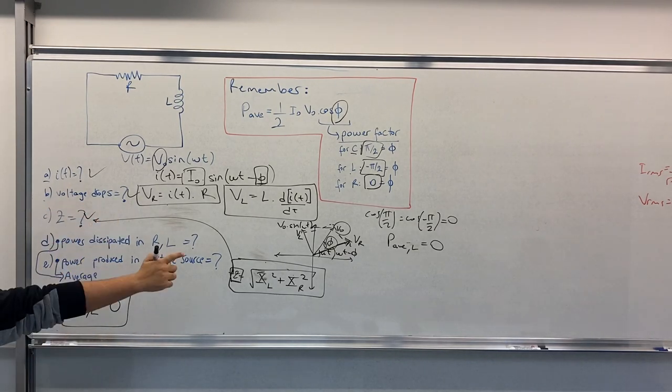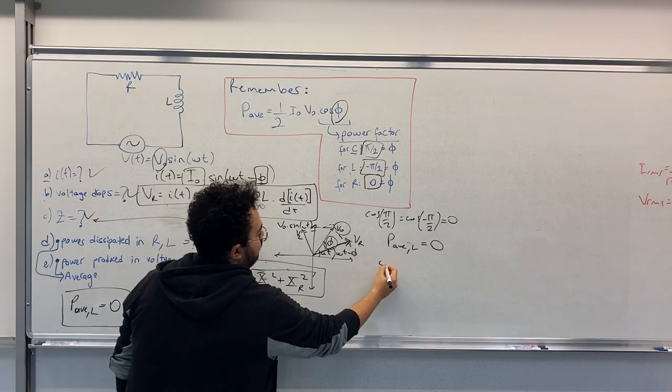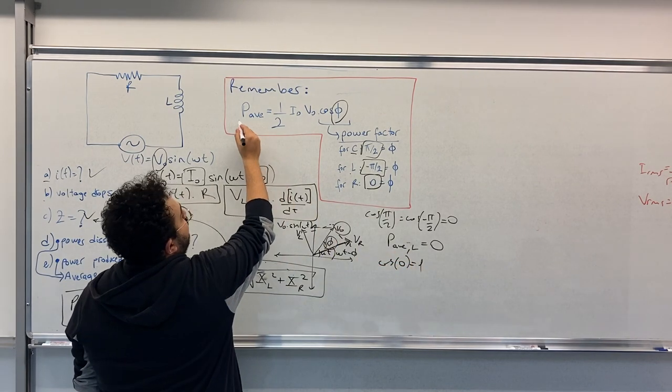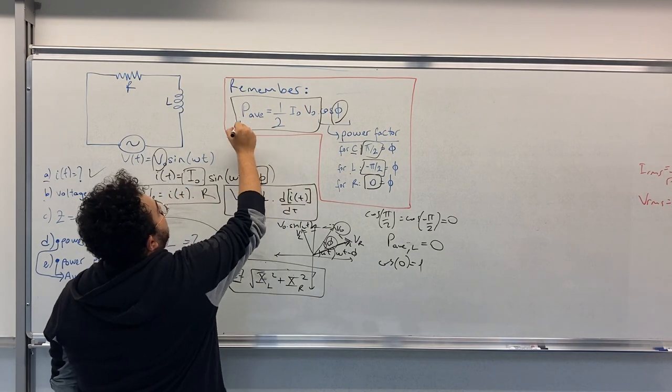And for R, we have cosine 0, which equals 1, so we have this part for R.